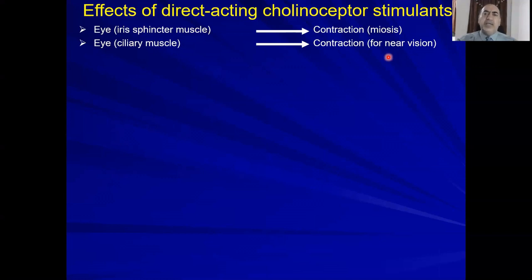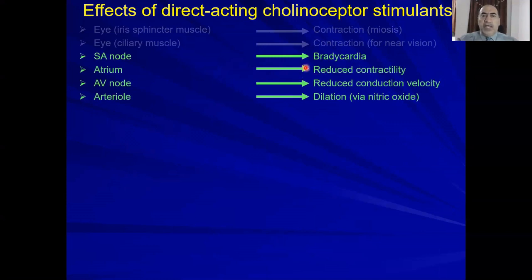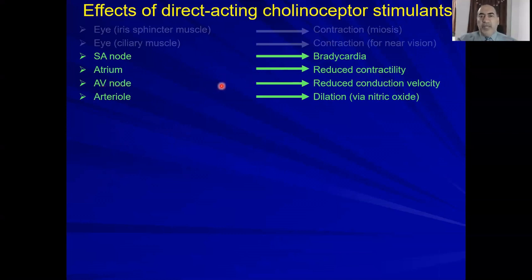During rest and digest, near vision accommodation is sufficient. On the heart, the parasympathetic nervous system has little or no effect on the ventricle — mainly acting on the atrium. On the SA node it causes bradycardia. On the atrium it reduces contraction. On the AV node it reduces conduction velocity, all contributing to bradycardia.